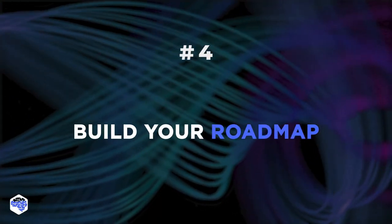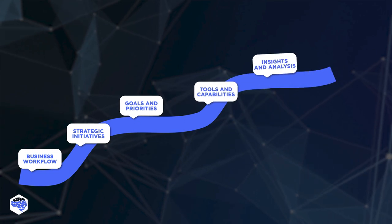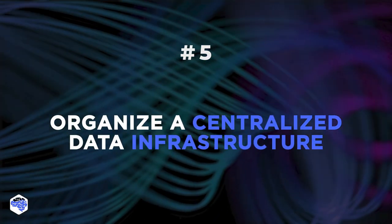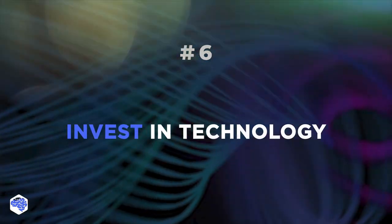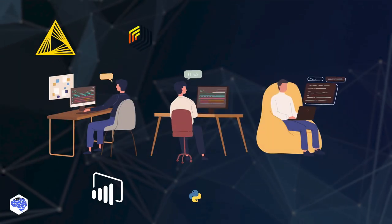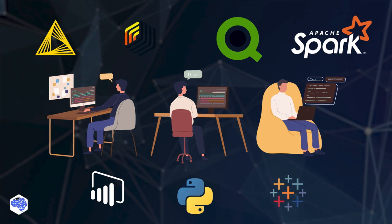Then build your roadmap. The strategic roadmap is a plan and schedule with priorities for addressing maturity issues. Next, organize a centralized data infrastructure within your company. Analytics don't work with silos and department-isolated data, so providing all employees with equal access to data and data processing tools should be your top priority. Finally, invest in technology, as each stage of analytics maturity implies the integration of new tools and approaches to analysis.